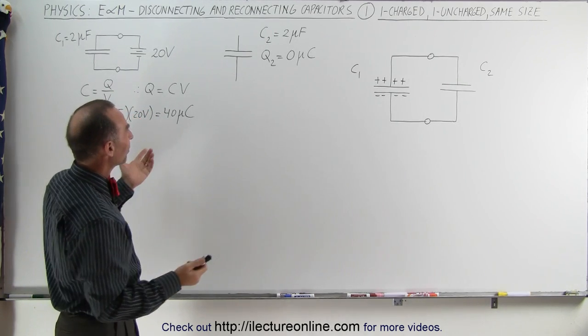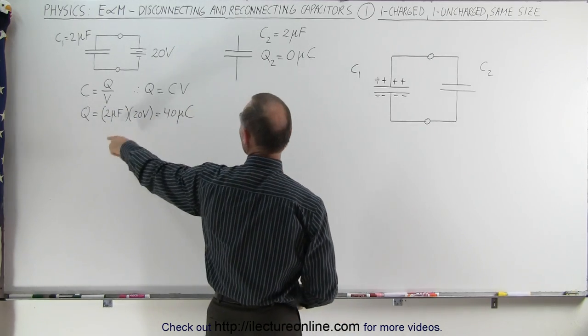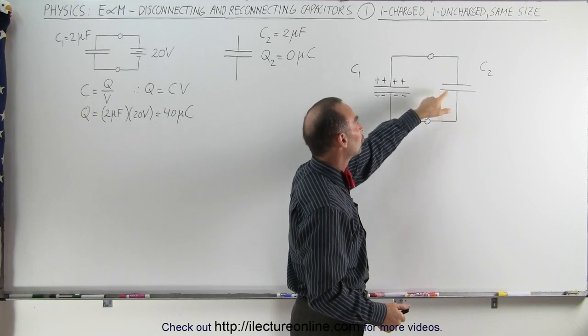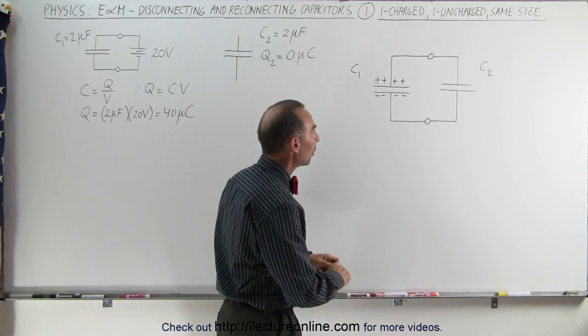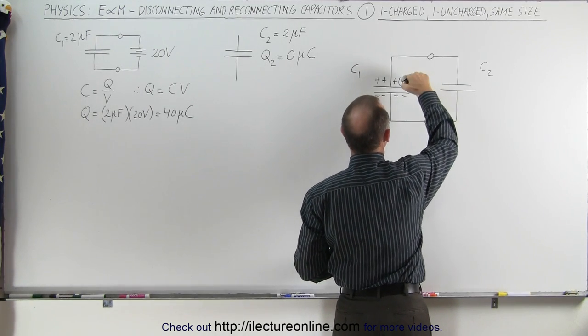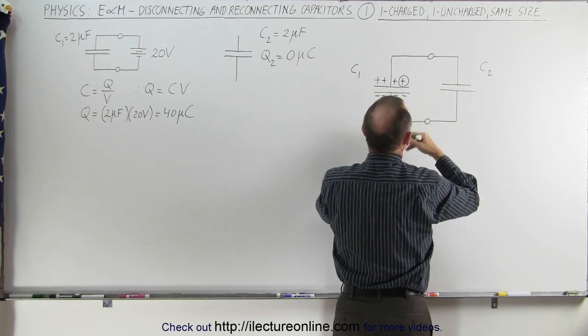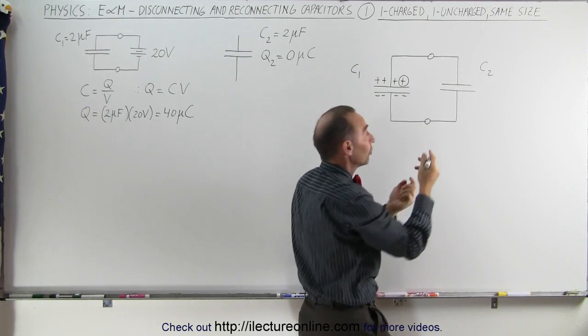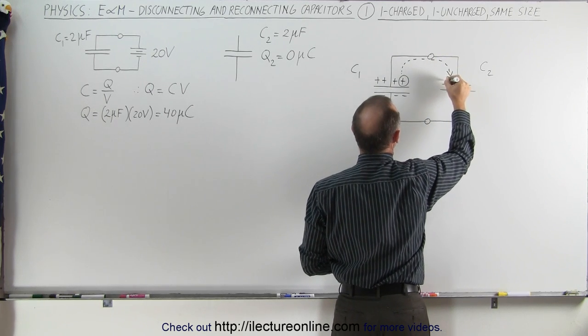So first of all, the simple example is we connect one that contains a charge of 40 microcoulombs to a capacitor that has no charge. They happen to be the same size capacitors. Well, what you'd expect now is that some of this charge will go over to the other capacitor, because here these charges are bunched together, they repel each other, they don't like to be close together, so these charges are going to begin to migrate to the other capacitor.